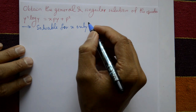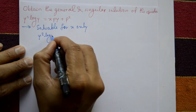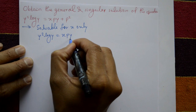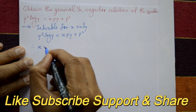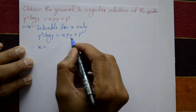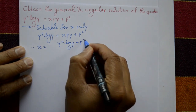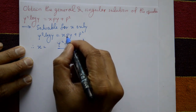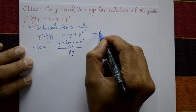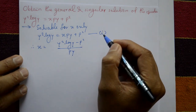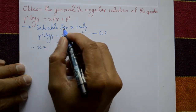Given: y² log(y) = xpy + p². Therefore, isolating x: x = (y² log(y) − p²) / (py). This is equation number one. Since the expression is solvable for x, we differentiate equation one with respect to y.